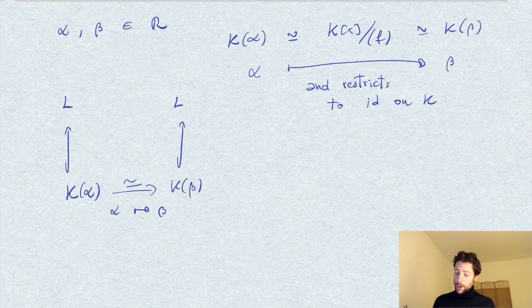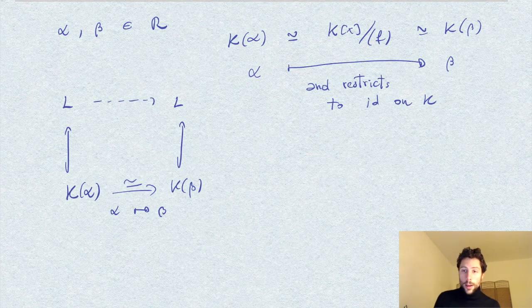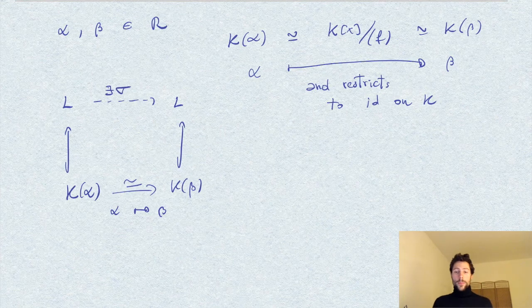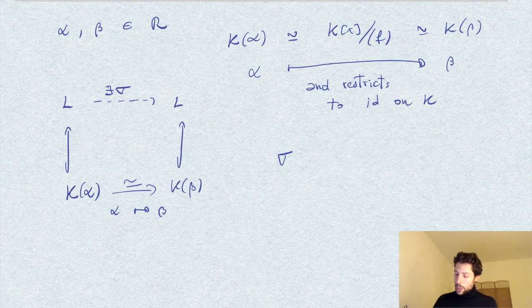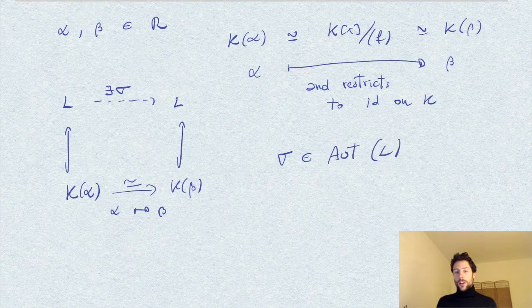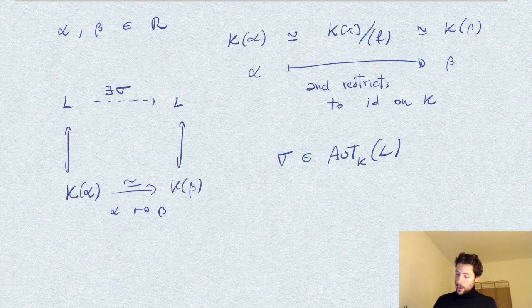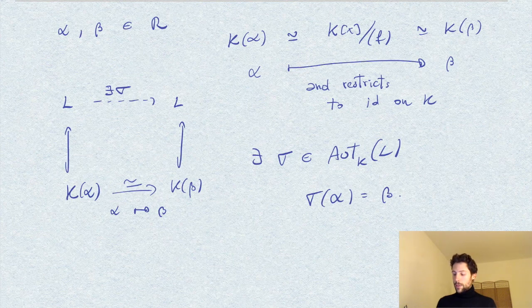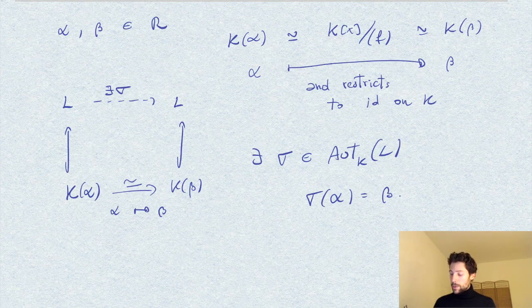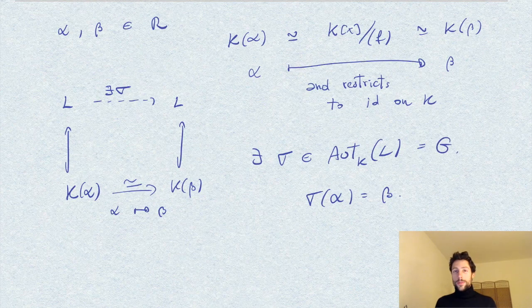Therefore, by the isomorphism theorem, we get an automorphism σ, which is an automorphism of L that fixes K and sends α to β. This shows that we found an element that realizes the transitive action of the group G, as we wanted to prove.